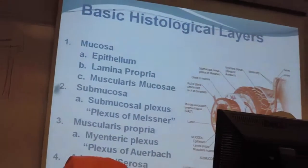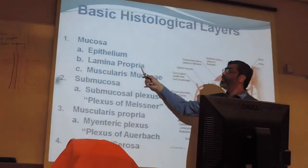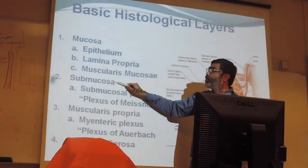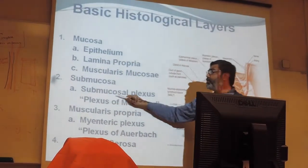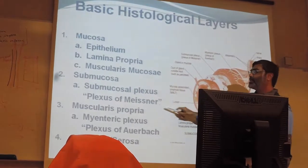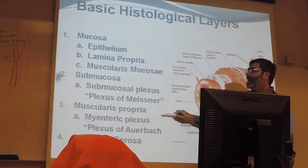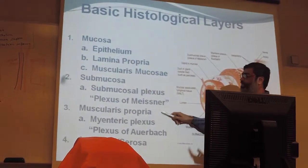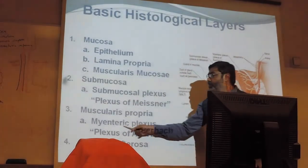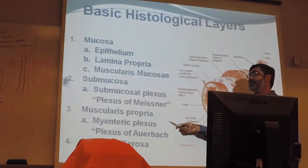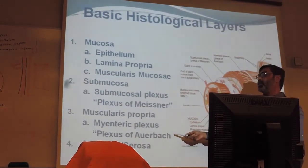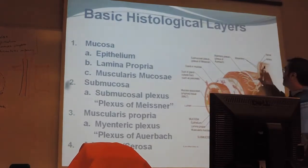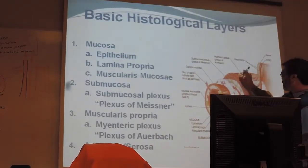Now the general plan: we have mucosa with epithelium, lamina propria, and muscularis mucosa. Then submucosa with Meissner's plexus. Then muscularis propria or muscularis externa, where we have the myenteric plexus between the circular and longitudinal muscle layers. And finally adventitia outside — the most outside connective tissue layer.